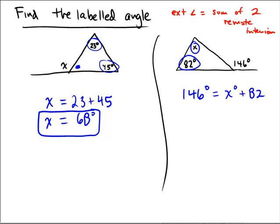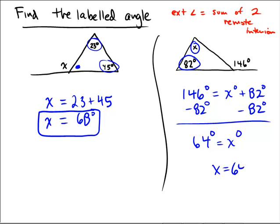So in this case, we only have to subtract 82 in order to isolate the variable X. So as I subtract 82 degrees from both sides, I end up getting 4 and 6. So we have 64 degrees is equal to X degrees. And therefore, X must be equal to 64. There we go. So X is 64.